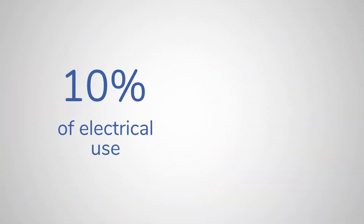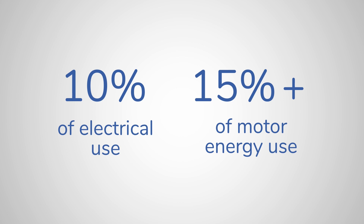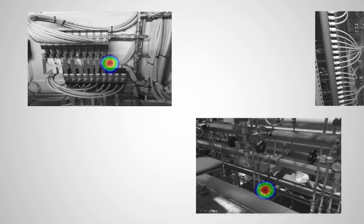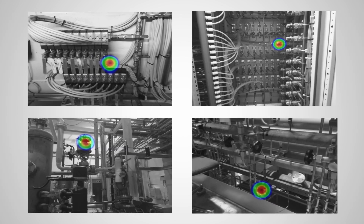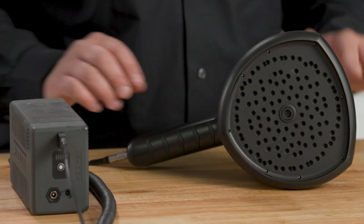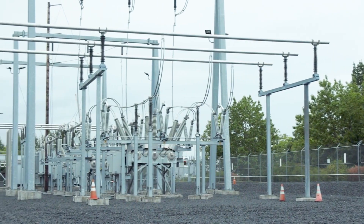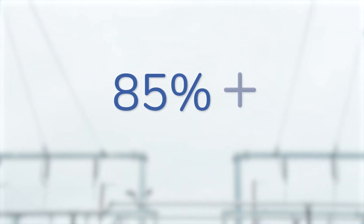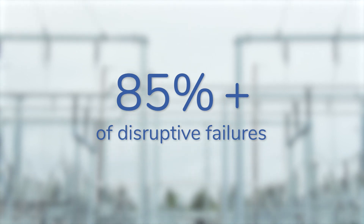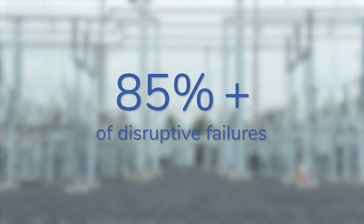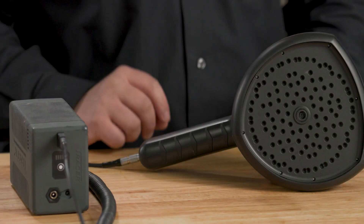As for return on investment, consider this: compressed air systems account for 10% of electrical and more than 15% of motor energy use by U.S. manufacturers. So when these systems leak, the resulting energy loss, safety hazards, and cost of replacing equipment make the SI124 critical to finding and repairing leaks. And as for electrical systems, more than 85% of disruptive failures in high and medium voltage equipment are related to partial discharge. The FLIR SI124's ability to accurately locate and assess partial discharge makes it a valuable inspection tool.